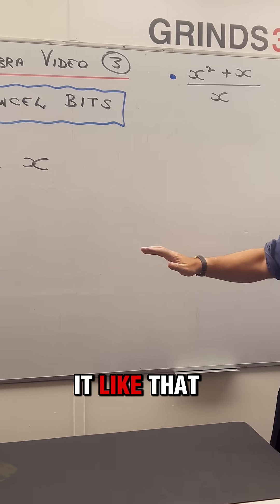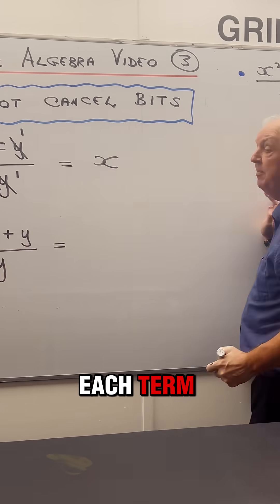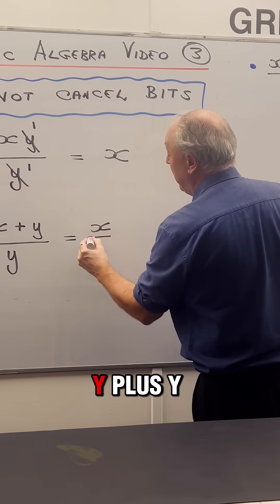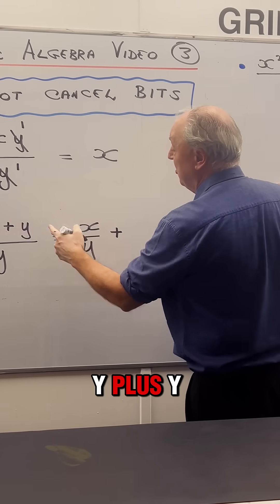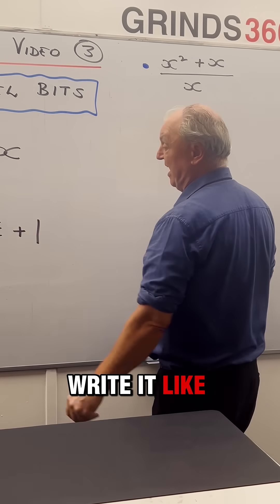What could I do with that? Well probably leave it like that but if you wanted to you could divide the y into each term on the top of the fraction. So I could get x over y plus y over y and y over y is 1. So you could write it like that.